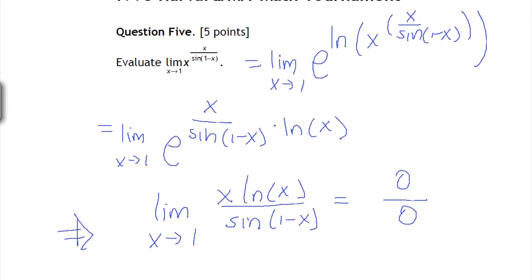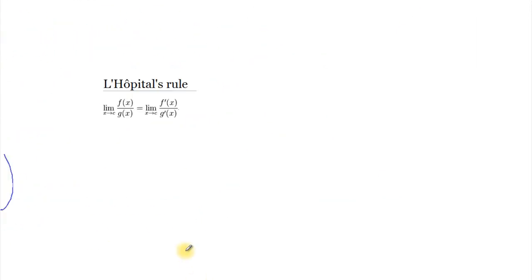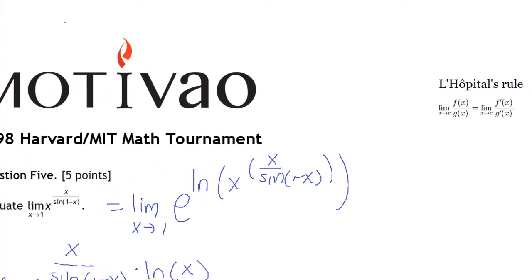So what can we do from here? We're going to use what's called L'Hôpital's rule. It says that the limit when x goes to c of f(x) divided by g(x) is equal to the limit as x goes to c of f'(x) over g'(x). So that means I have to take derivatives.